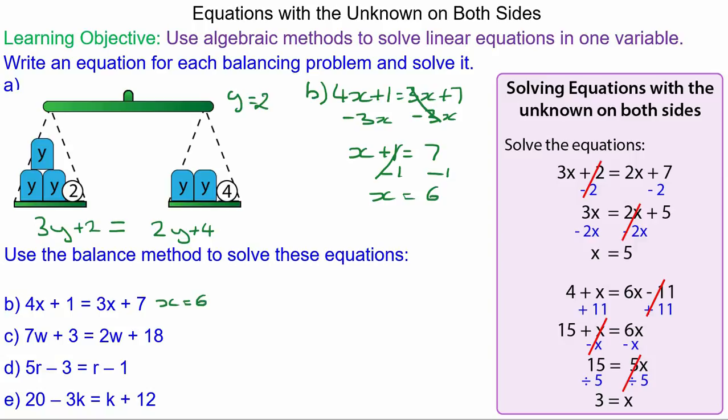For question C, we have 7w plus 3 equals 2w plus 18. So we can take away 2w from both sides. 2w take away 2w is 0, and 7w take away 2w is 5w plus 3 equals 15.